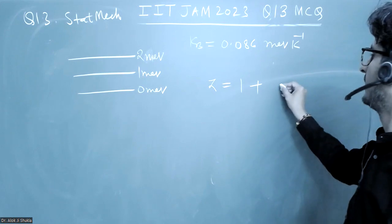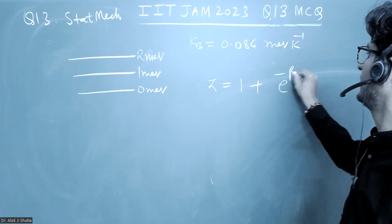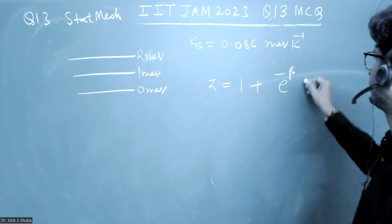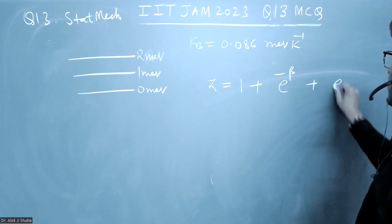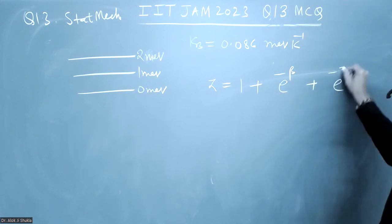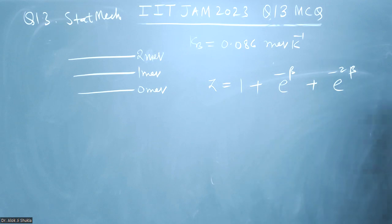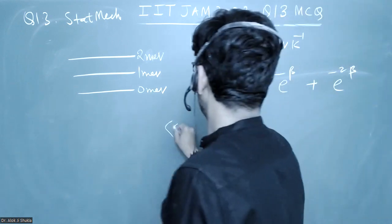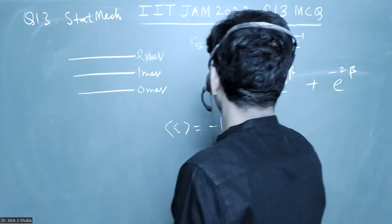1 plus e to the power minus beta into 1 plus e to the power minus 2 beta. So we will put the value of beta later on and what is the average energy? It is minus 1 by z del z by del beta.